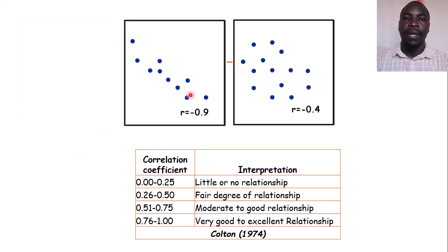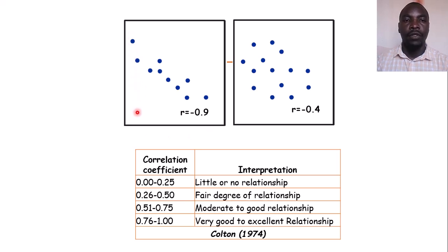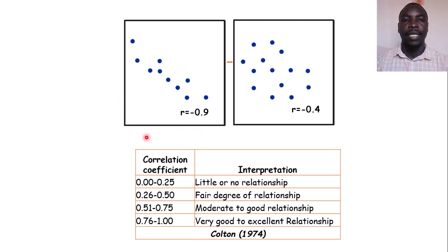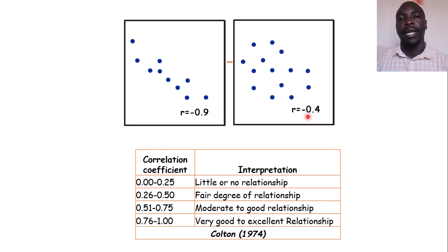Now we look at a negative correlation. When you plot the points of x and y, you see that for low values of x you have high values of y, and for high values of x you have lower values of y — meaning as x increases, y reduces.